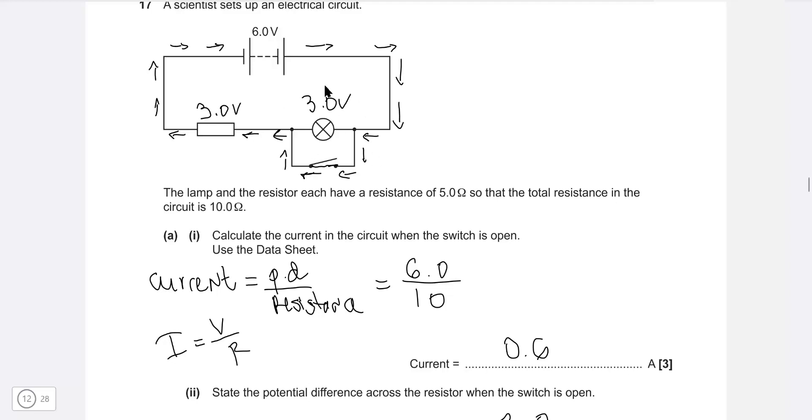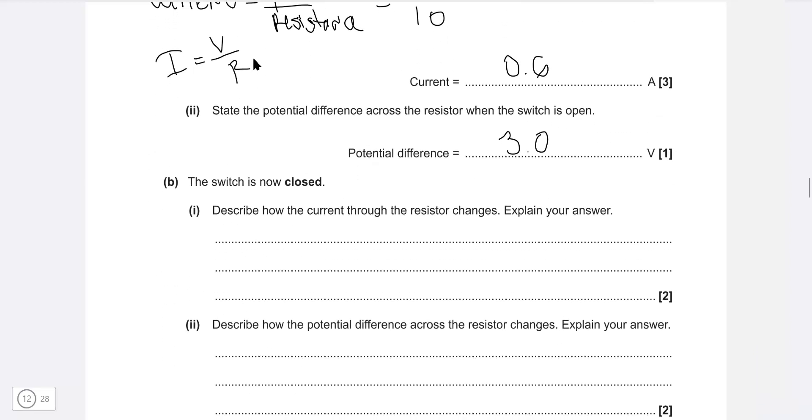Before, with the filament lamp which was 5 ohms, the total resistance was 10 ohms. But now it will be just 5 ohms, because this bulb will essentially not be part of the circuit anymore, because the current will do this and then back here again. Because the resistance will be lower, the current will be higher. So we can say for the first mark that the current increases as the resistance in the circuit decreases.